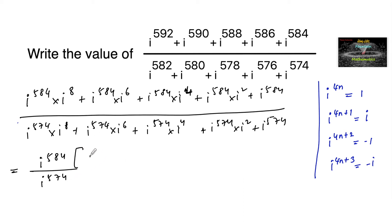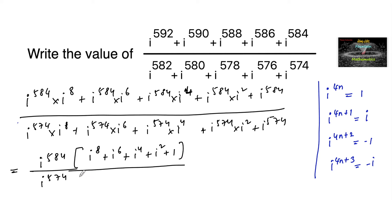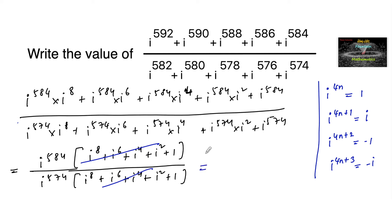After taking out the common factors, the numerator has i to the power of 584 times the bracket: i to the power of 8 plus i to the power of 6 plus i to the power of 4 plus i to the power of 2 plus 1. The denominator has i to the power of 574 times the same bracket. Since the bracketed expressions are identical, they cancel, leaving i to the power of 584 divided by i to the power of 574, which equals i to the power of 584 minus 574, that is i to the power of 10.